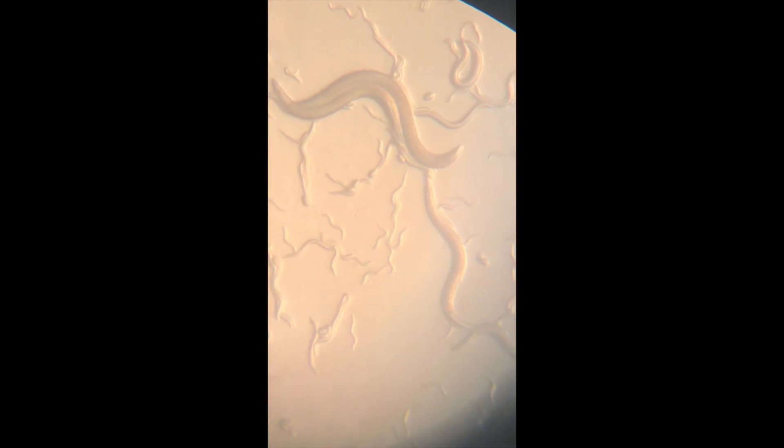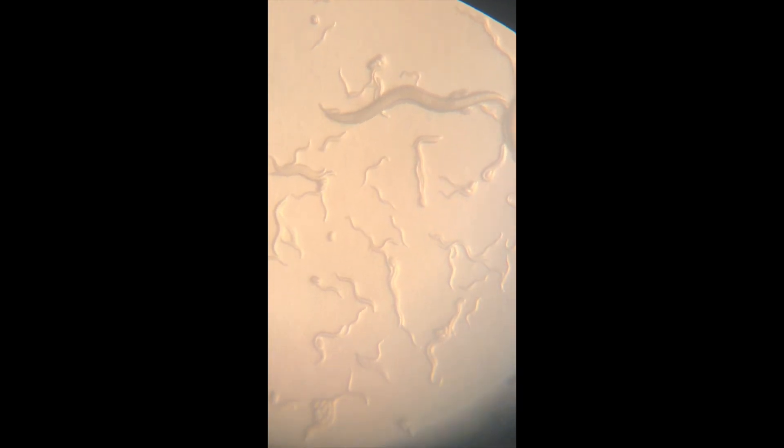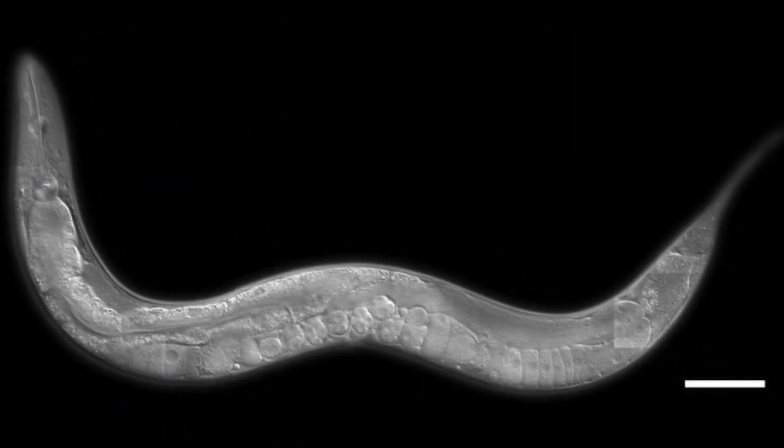C. elegans are microscopic worms that naturally live underground. They feed on bacteria, making them easy to take care of. Their movement is very snake-like, and their typical life cycle is three to four days.